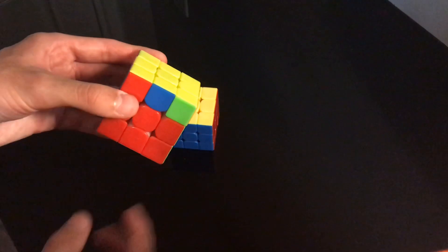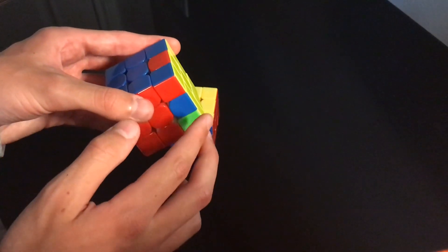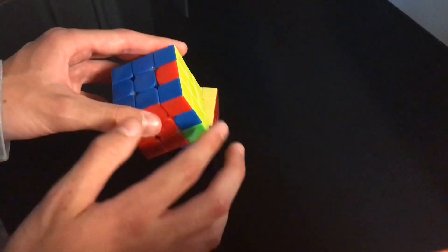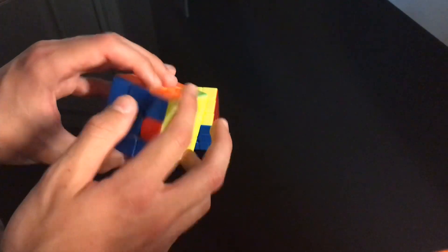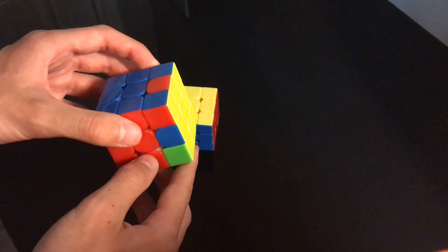And then for this R perm, we can see that the block, the checker pattern of one, two, three, four, five is on the left side. So we know that it is back here. In this case, I actually have a special alg for you guys.